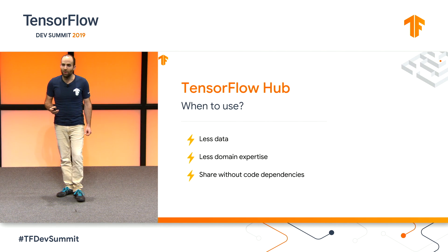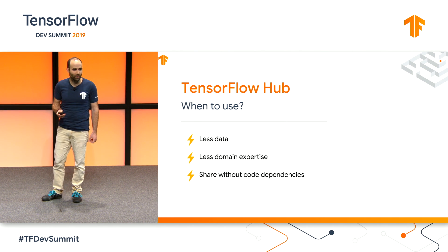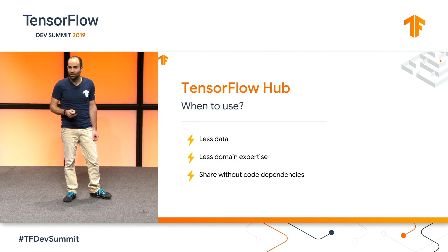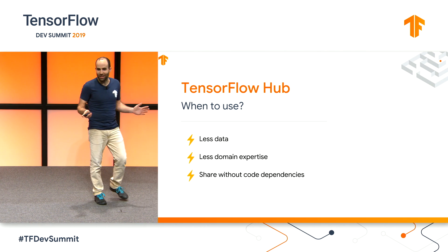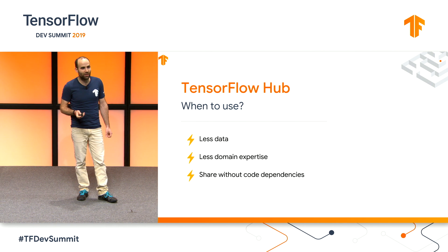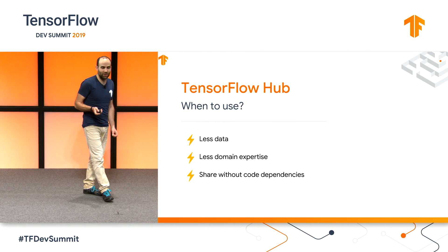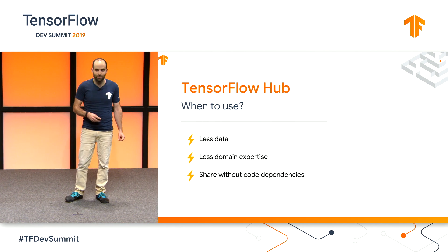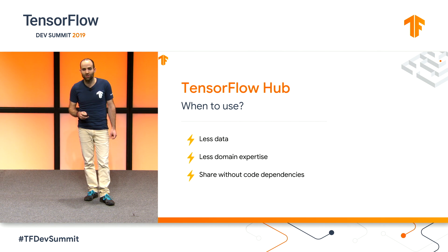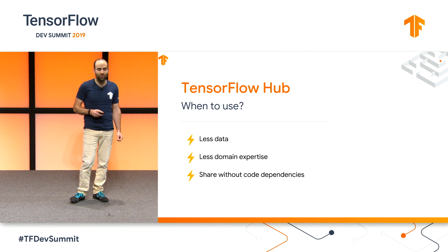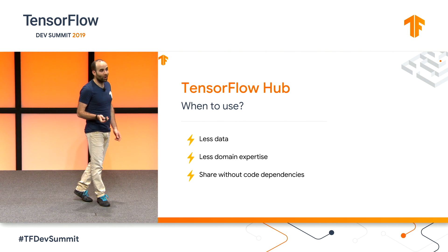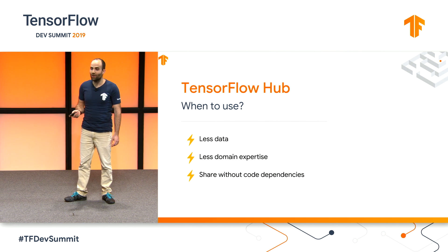Let's start by talking about when you'd want to use it. If you have problems collecting enough data to train your models from scratch, then transfer learning is a technique for you. You can use Hub to make it easy to reuse parts of models that were trained on large amounts of data. Additionally, since it's so easy to reuse computations and weights, it becomes possible to leverage features without having to learn how to feed them into neural networks. So images, text, and videos are features you can use with a single line of code.